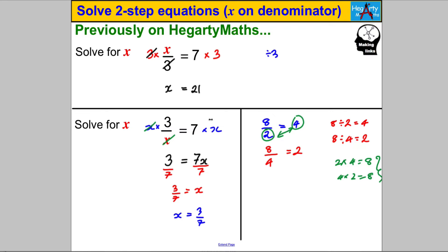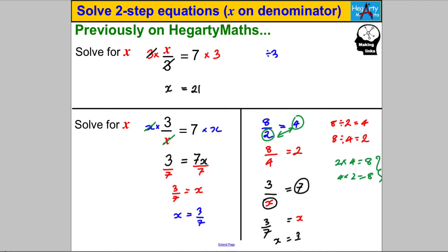In our case we're solving 3 divided by X equals 7. Using the related division fact, I can just swap X and 7: X equals 3 divided by 7, which is 3/7 — the same answer as before, with much less working. So when X is on the bottom you can simply swap these two numbers. Let's give it a go.